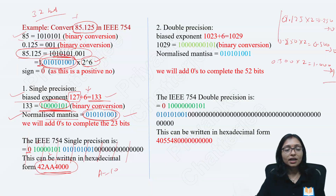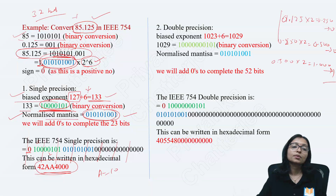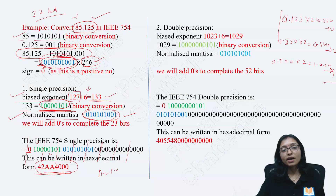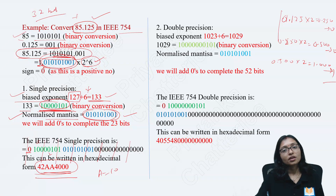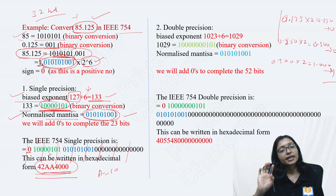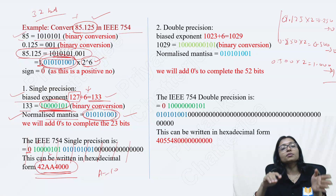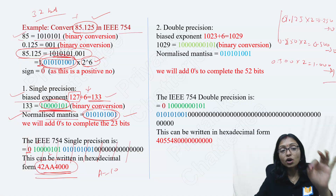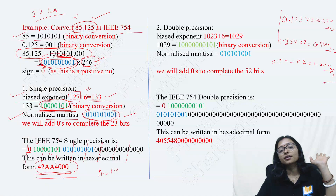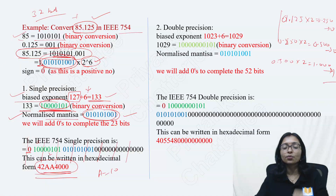If you are not able to understand, just repeat the video once again and focus on the color. Color will help you understand what is going on. Here, I have to write: sign bit, after that exponent, after that mantissa. From where will I get the exponent? Bias plus how many bits I am shifting.